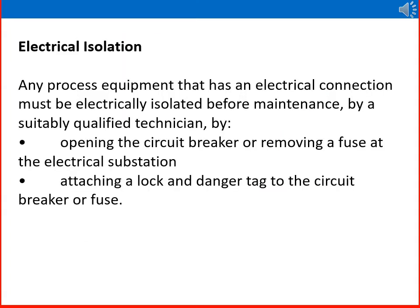For electrical isolation, any process equipment that has an electrical connection must be electrically isolated before maintenance by a suitably qualified technician. This is done by opening the circuit breaker or removing a fuse at the electrical substation, then attaching a lock and a danger tag to the circuit breaker or fuse.